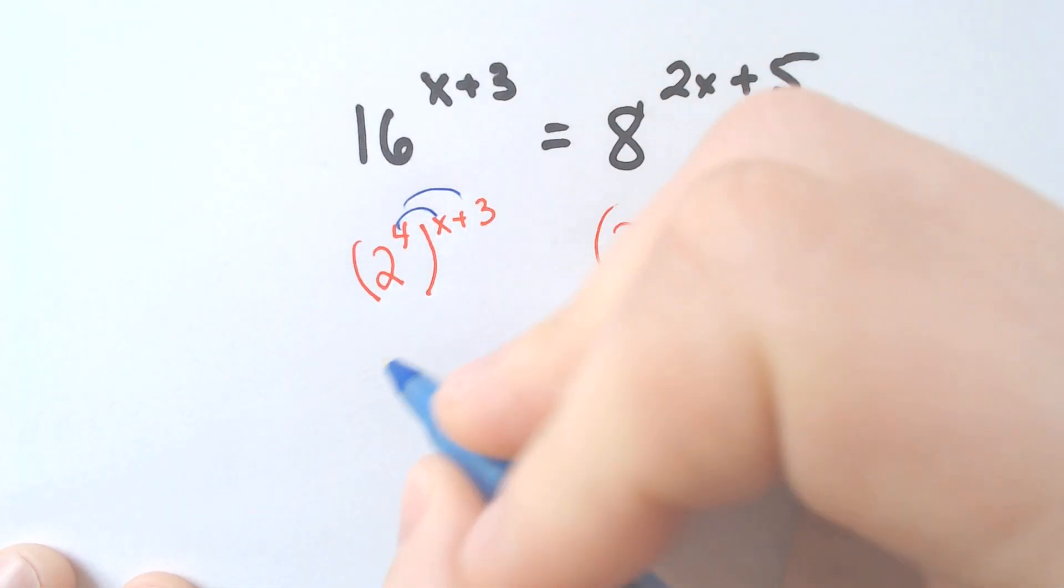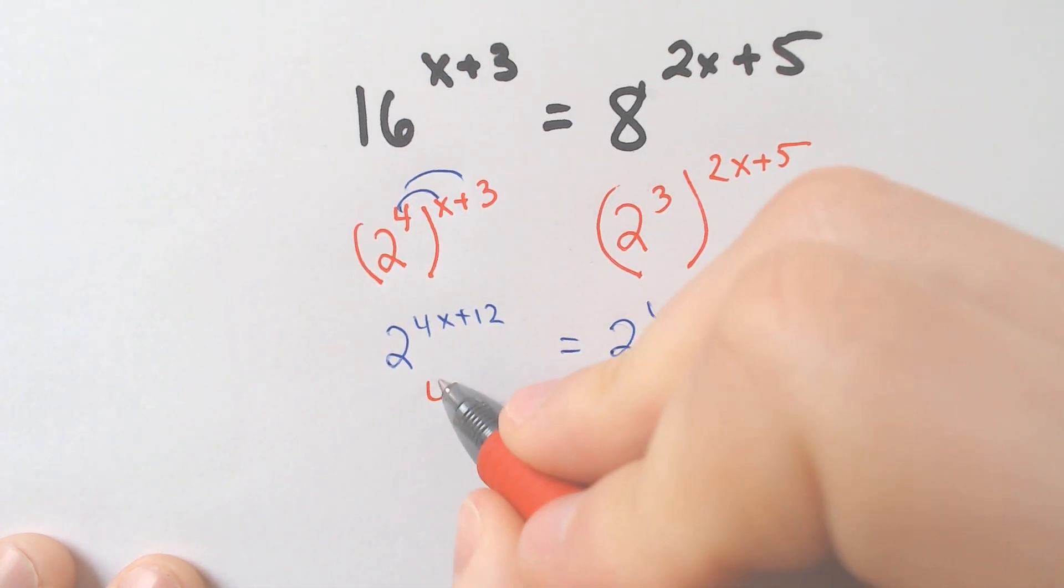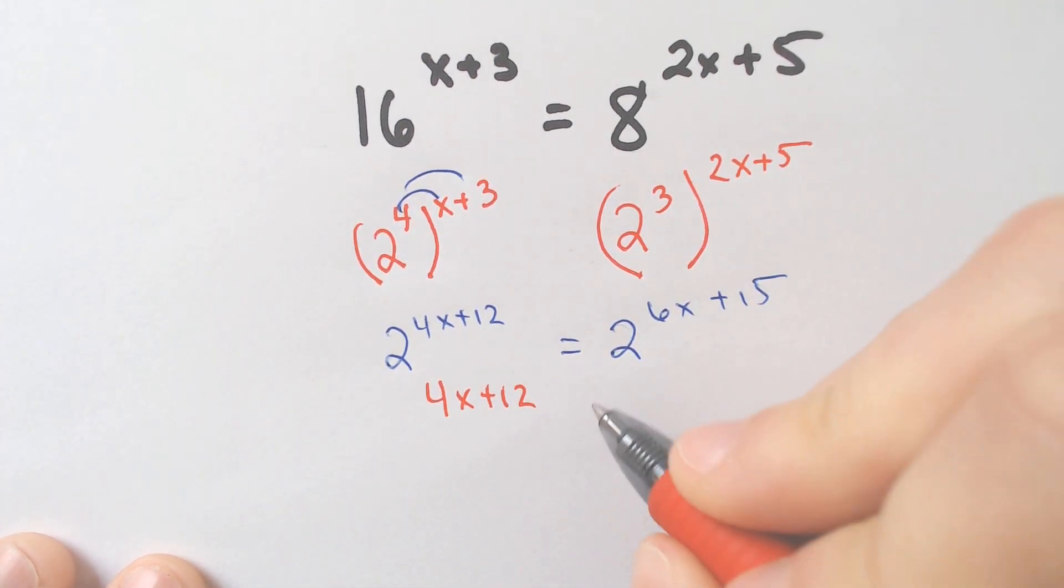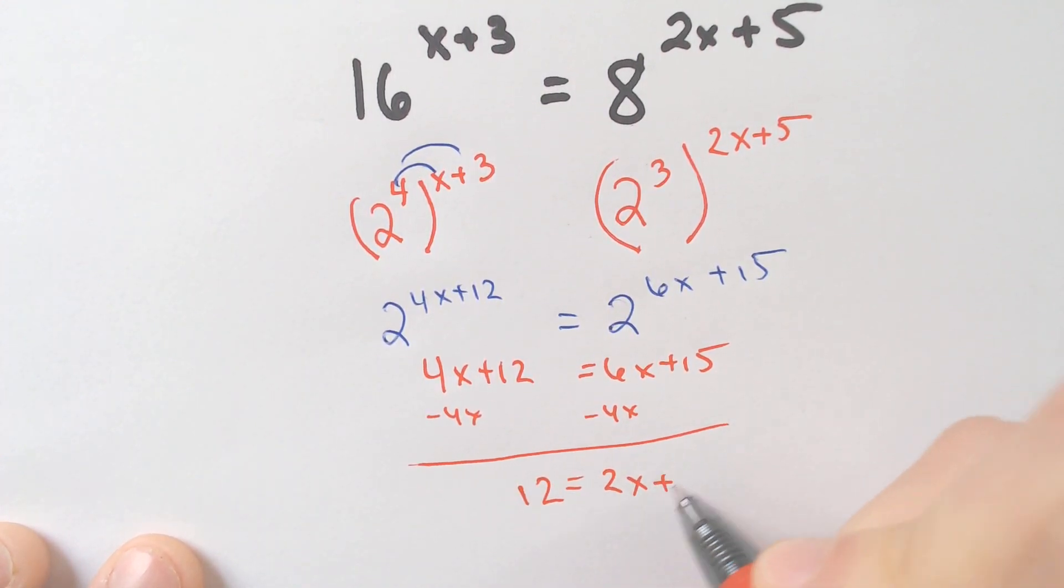Distribute the 4. 2 to the 4x plus 12 will equal 2 to the 6x plus 15. Now, because they're both a 2, you just set 4x plus 12 equal to 6x plus 15. Move the 4x over. I'm going to subtract 4x from both sides. We get 12 is equal to 2x plus 15.